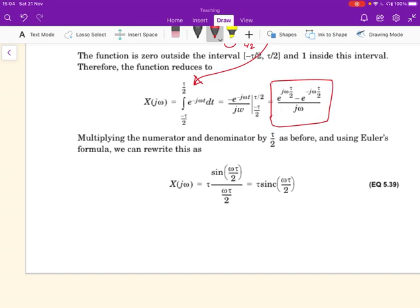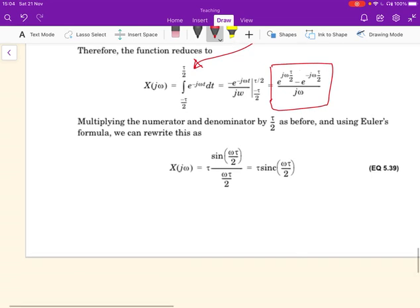Remembering that the difference of two complex conjugate exponentials is the sine function divided by 2j, we can represent this as sine omega tau by 2. Multiplying the numerator and denominator by tau by 2, we get this function, which is recognized as the sinc function: tau sinc omega tau by 2.